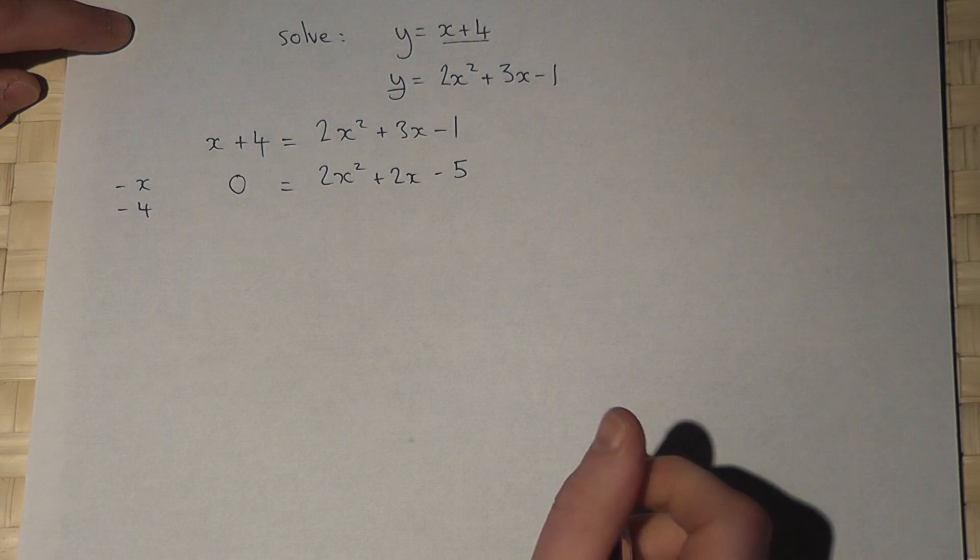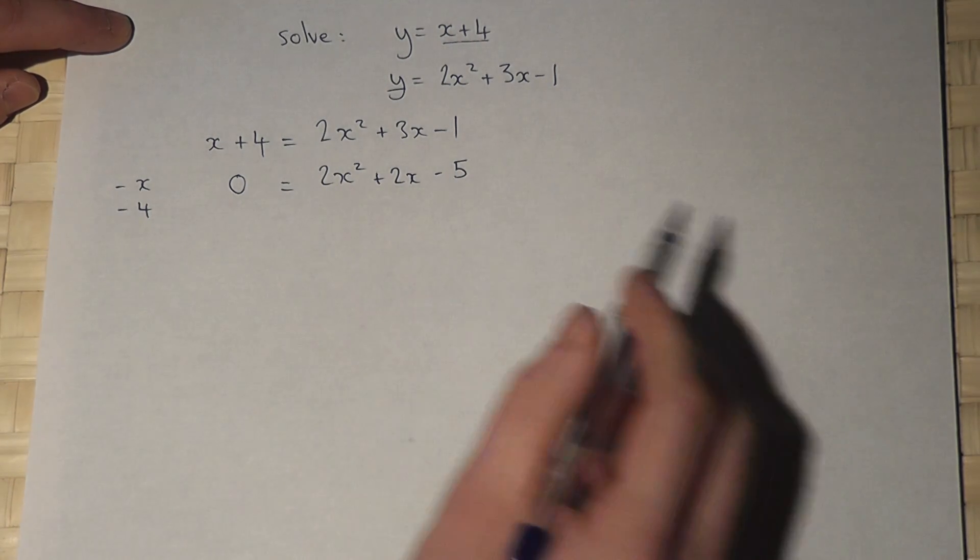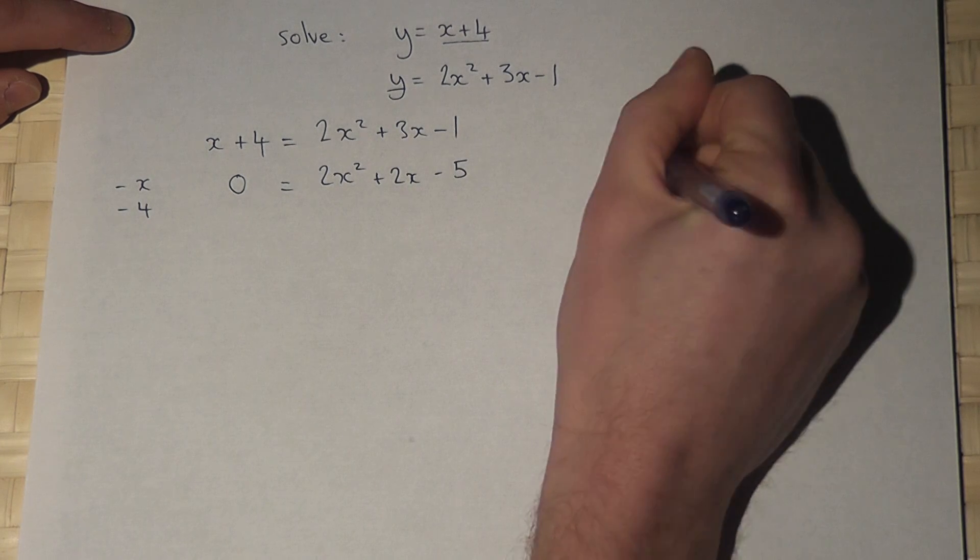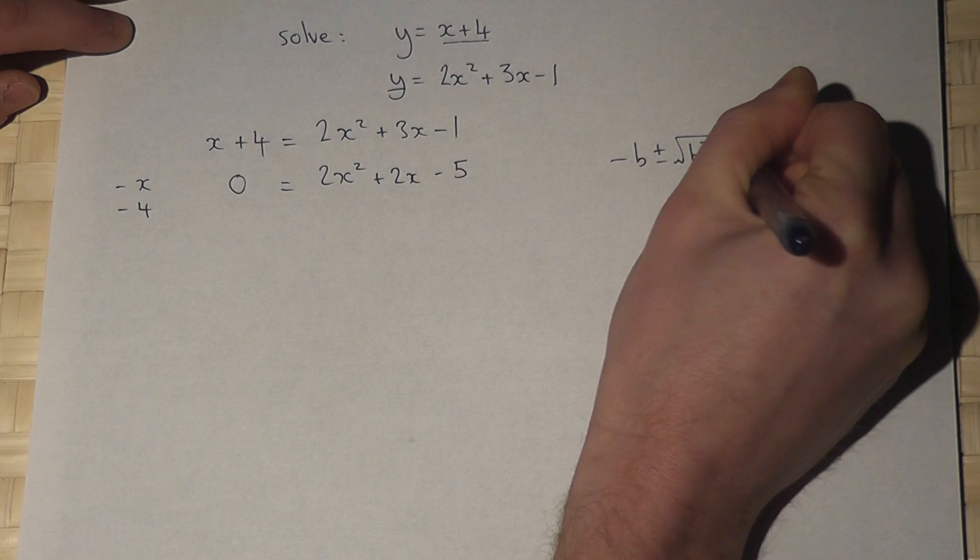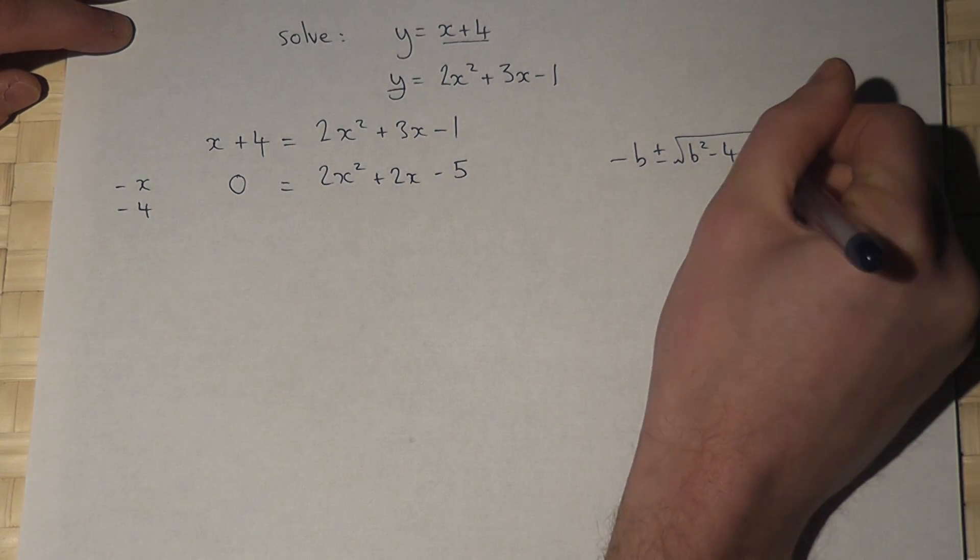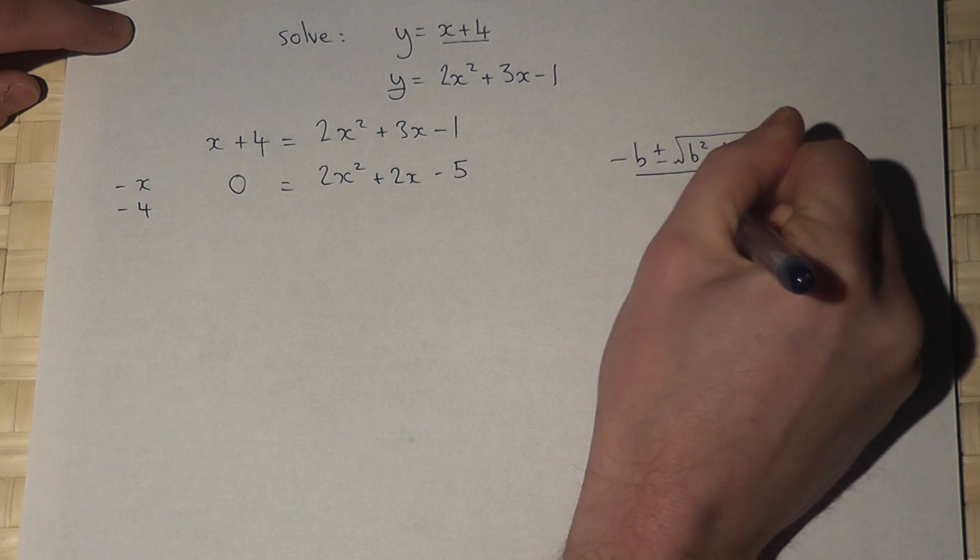So I need to now try to solve this equation. Now, to solve this, I can use the quadratic formula: minus b, plus or minus the square root of b squared, minus 4ac, all over 2a.